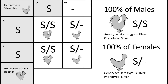The first pairing we will look at is simple: a homozygous silver male bred to a hemizygous silver female. From this pairing, 100% of the offspring will be silver, with the males being homozygous for silver and the females being hemizygous for silver. The big takeaway here is that you can never get a gold bird when breeding two silver birds together.